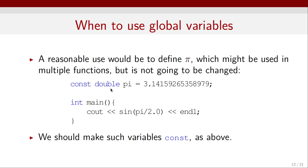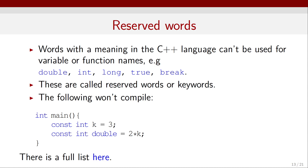Now let's talk about reserved words. Words with a meaning in the C++ language cannot be used for variable or function names — things like double, integer, long, true, break, and so on. These are called reserved words or keywords, and you should avoid using them. For example, this code will not compile because I tried to declare a variable and call it double, which is a reserved keyword.